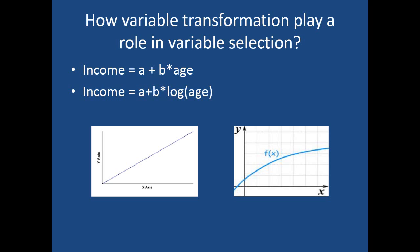We know that income increases rapidly with age initially, then it gets settled down and actually drops after a while — especially in blue collar jobs. If you assume a linear relationship between income and age, that is wrong because income does not increase linearly with age. It has a non-linear relationship — income grows and then increases in a decreasing way. So instead of using age as the independent variable, we can actually use the logarithm of age.